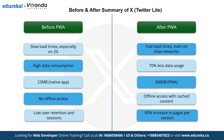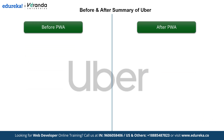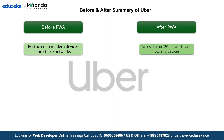While Twitter Lite demonstrated the potential of progressive web apps to revolutionize user engagement and performance, let's now look at how Uber leveraged progressive web apps to enhance accessibility and transform their global user experience. Before Uber adopted progressive web apps, the mobile app experience was restricted to modern devices and stable networks, limiting accessibility for users in areas with unreliable connectivity. After implementing progressive web apps, Uber became accessible even on 2G networks and low-end devices, opening up its services to a much wider audience.